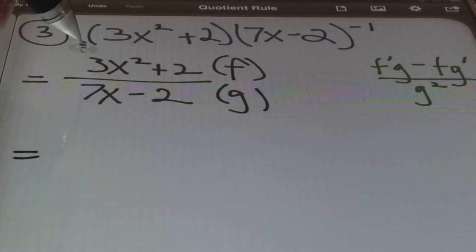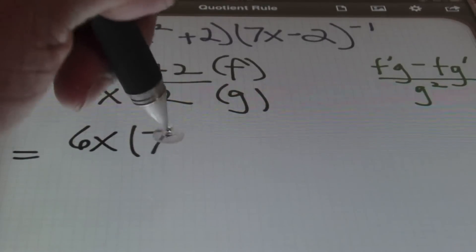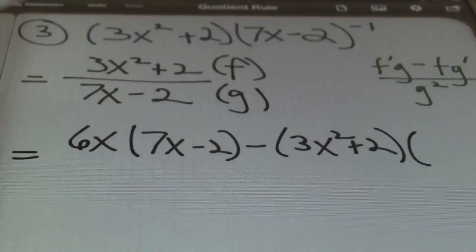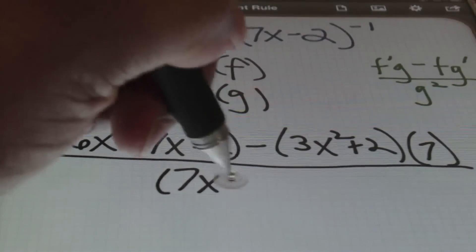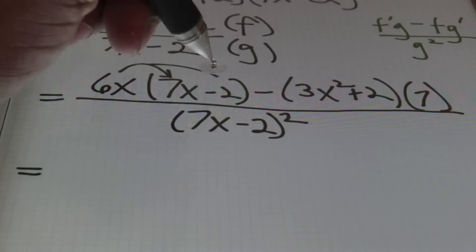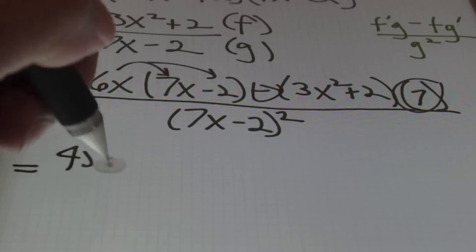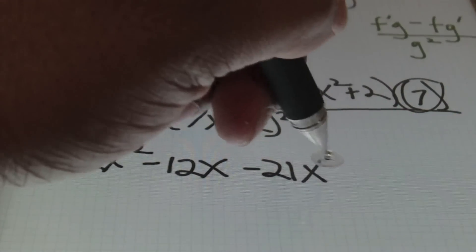Starting by finding the derivative of the numerator: the derivative of 3x squared + 2 is 6x using the power rule. That's times the denominator (7x minus 2), minus the numerator (3x squared + 2), times the derivative of the denominator, which is 7. All of that is over the denominator squared: (7x minus 2) squared. From there I distribute the 6x and combine the negative with the 7 to distribute a negative 7, giving me 42x squared minus 12x minus 21x squared minus 14, all over (7x minus 2) squared.